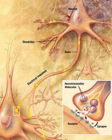Chemical synapses are not the only type of biological synapse; electrical and immunological synapses also exist. Without a qualifier, however, "synapse" commonly means chemical synapse.